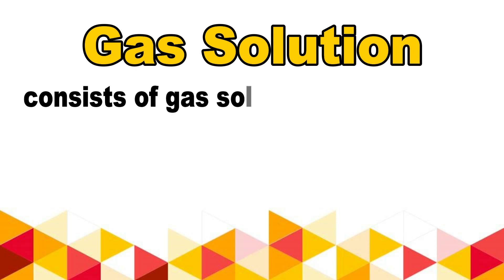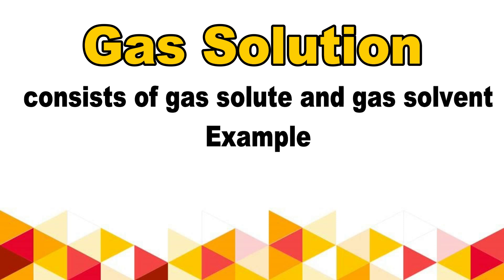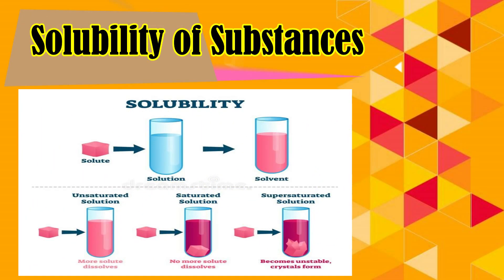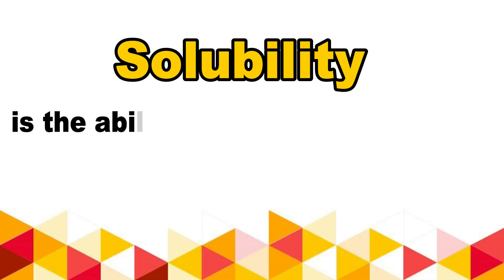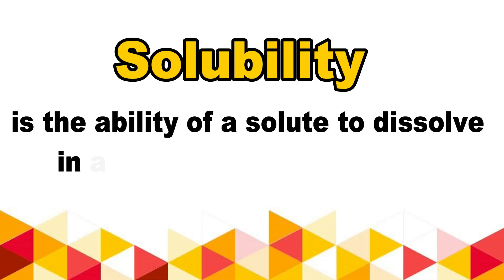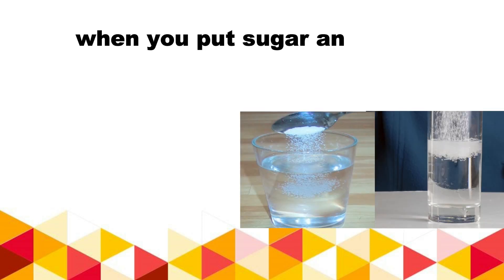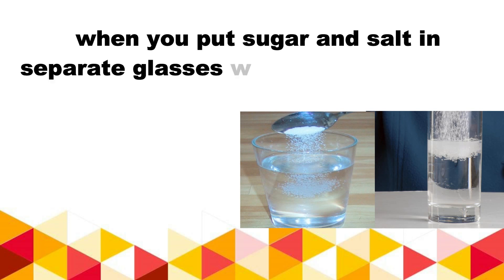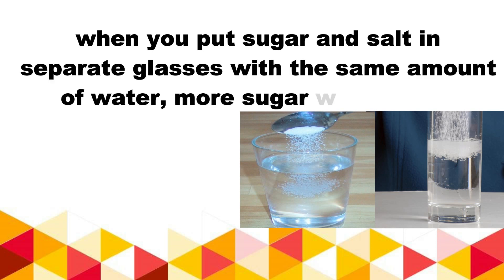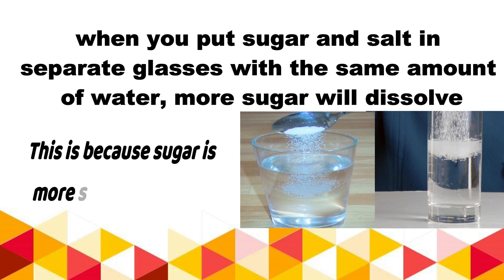Gaseous solution consists of gas solute and gas solvent. An example of gaseous solution is air. Solubility of substances: Solubility is the ability of a solute to dissolve in a given amount of solvent. When you put sugar and salt in separate glasses with the same amount of water, more sugar will dissolve. This is because sugar is more soluble than salt.